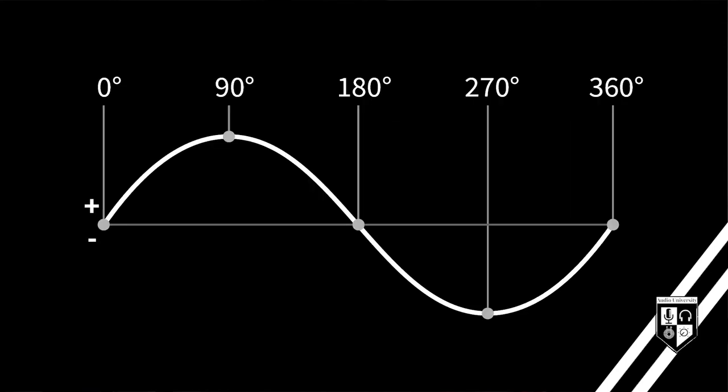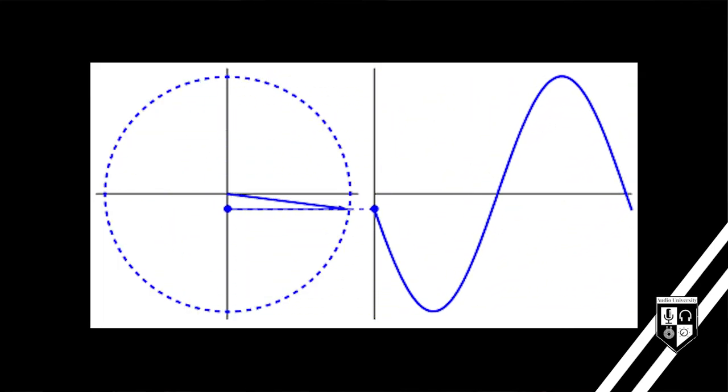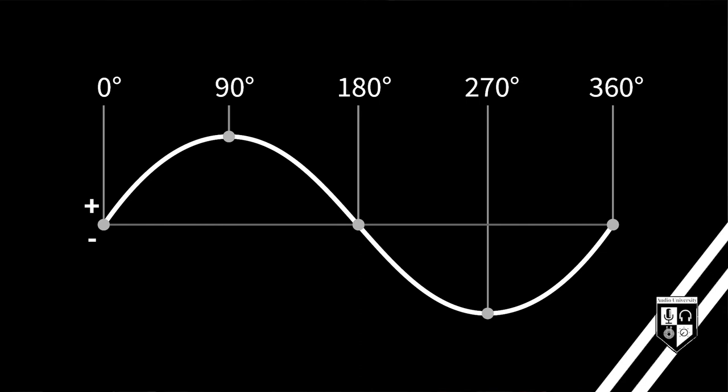Audio waves are cycles. The cycle of this wave begins at zero, goes through a positive phase, and then progresses through a negative phase. Just like a circle, the points along the cycle of a sound wave can be charted from zero degrees to 360 degrees.